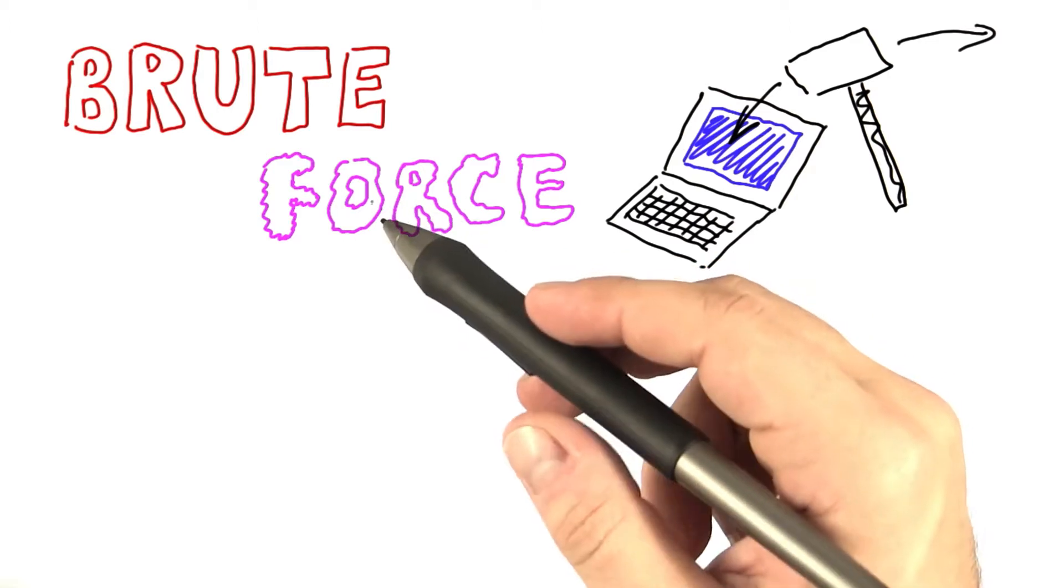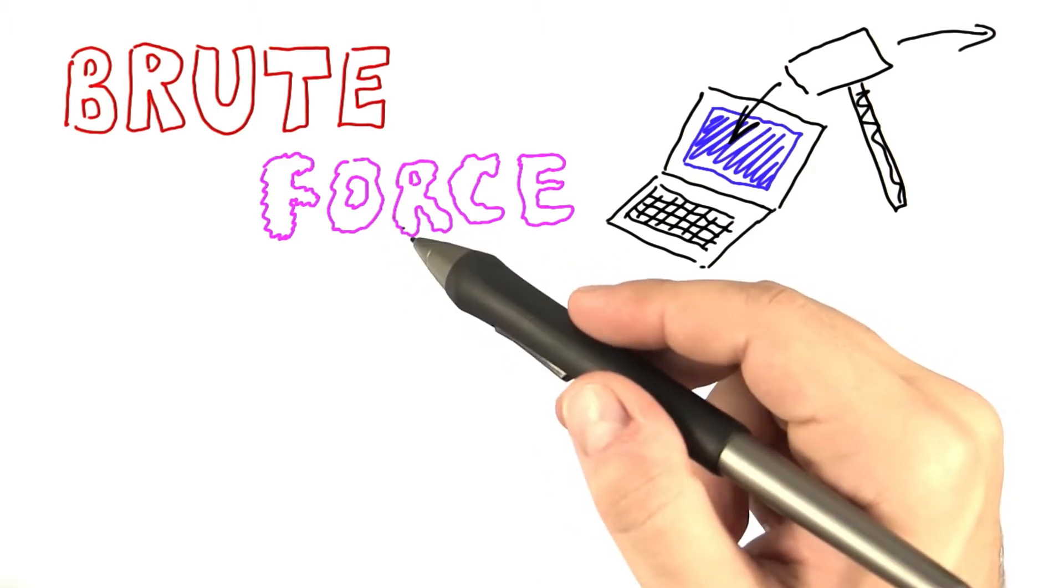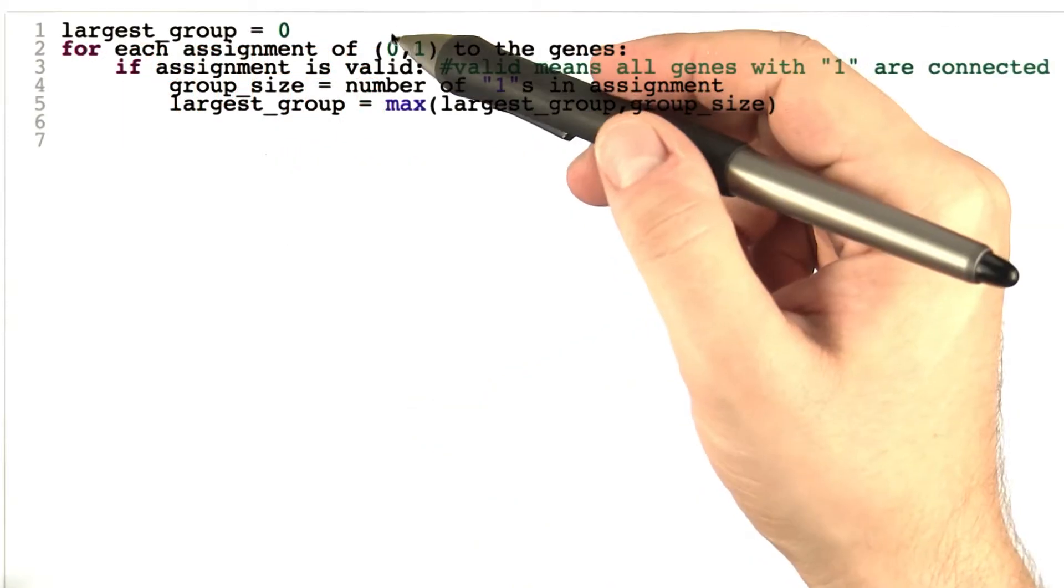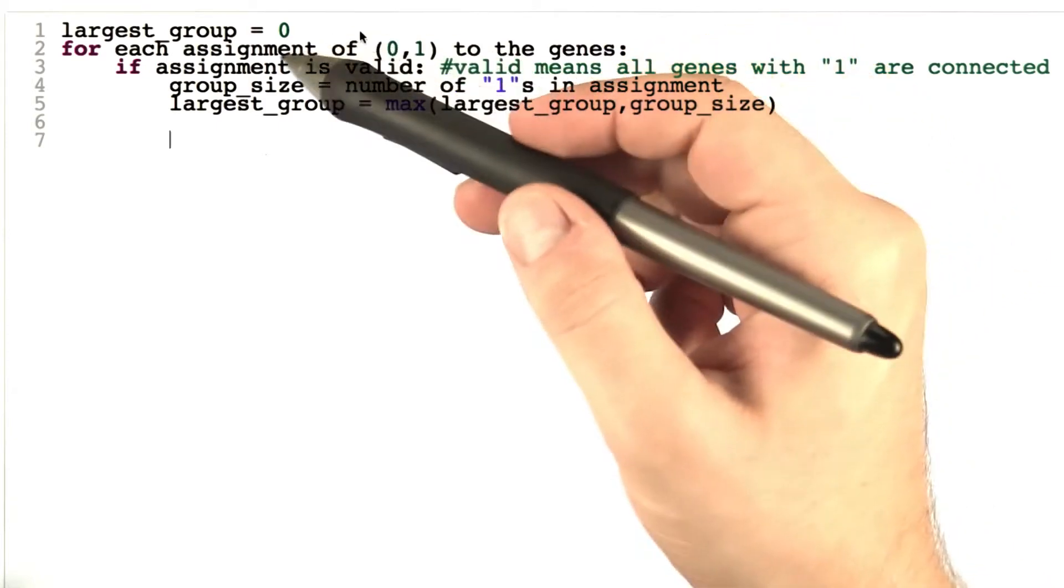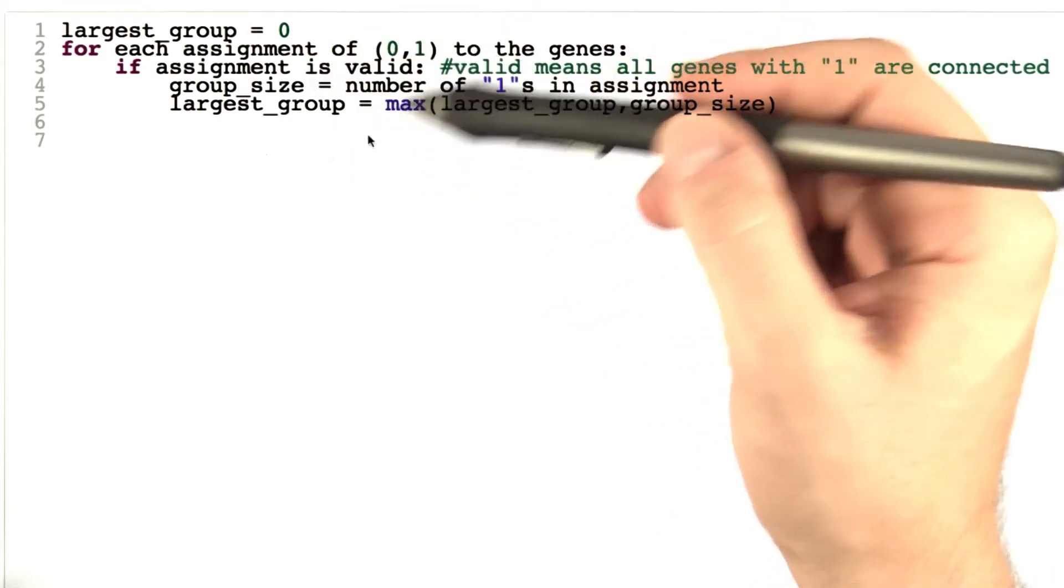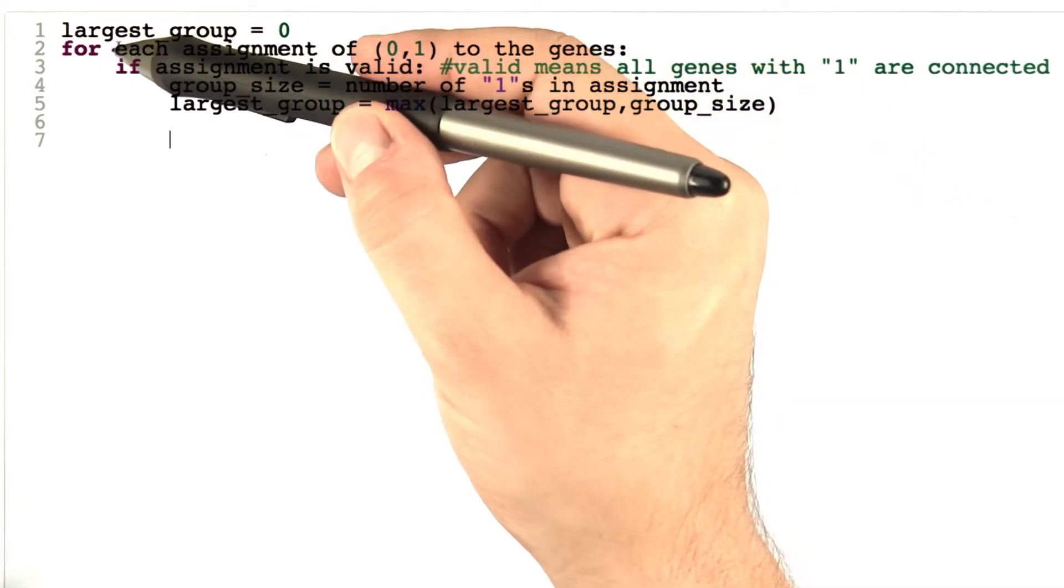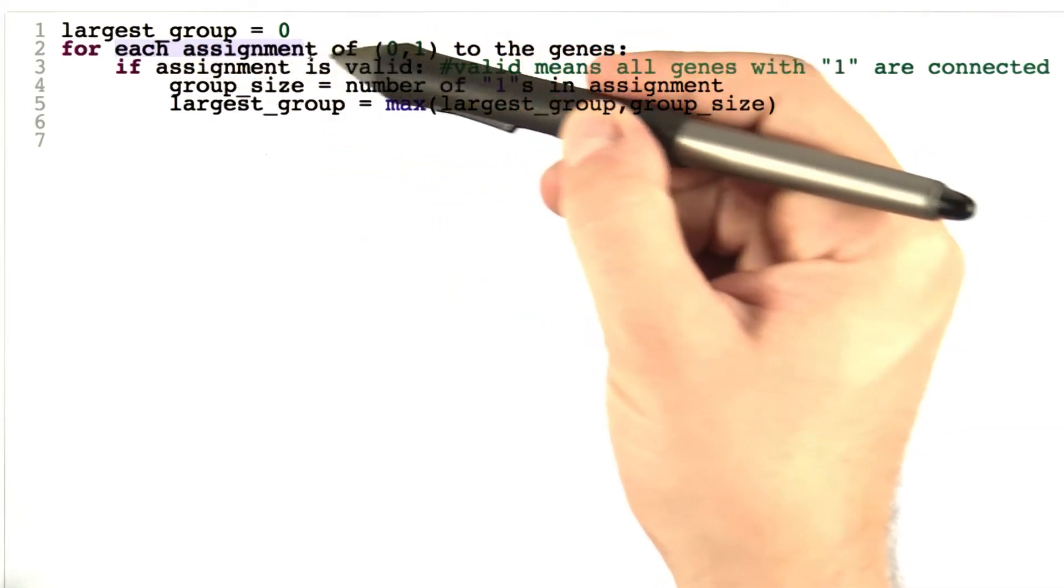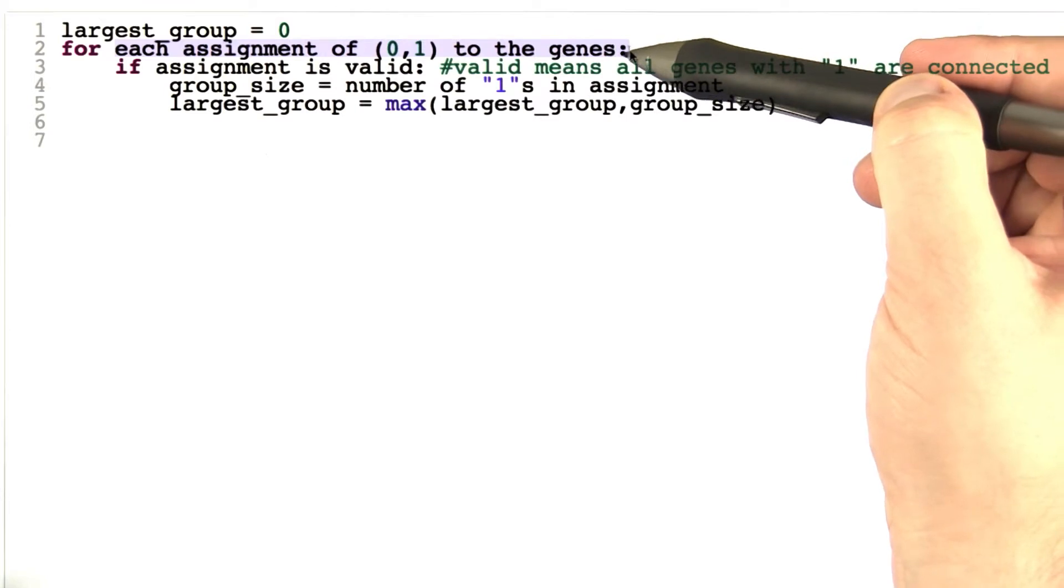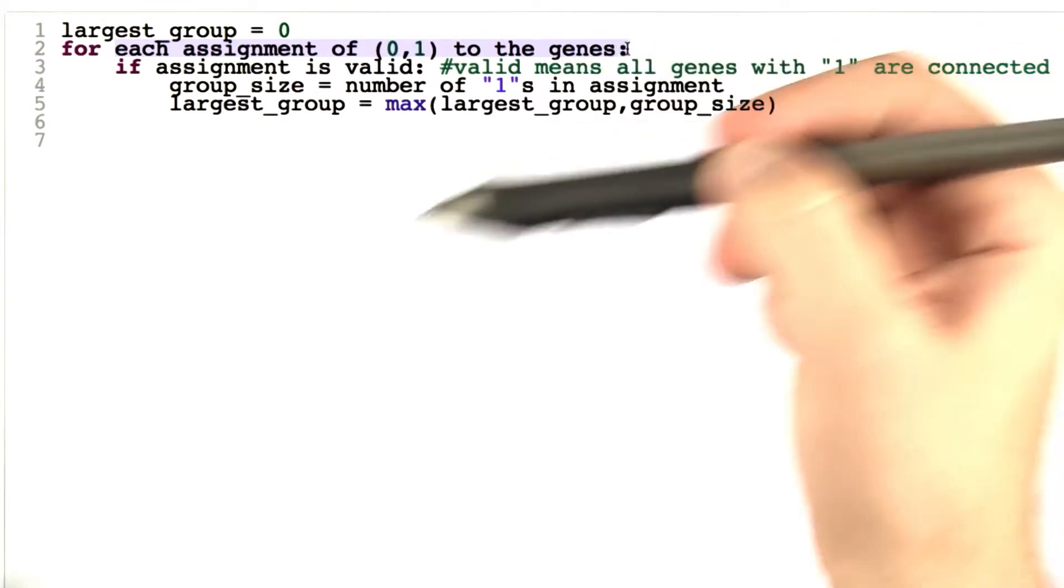Brute force is the algorithm that Alice, Bob and Carol were using initially. So you remember for example that for Bob we were proposing an algorithm that simply went through all possible assignments of 0 and 1 to the vertices, or at that time we still called them genes.